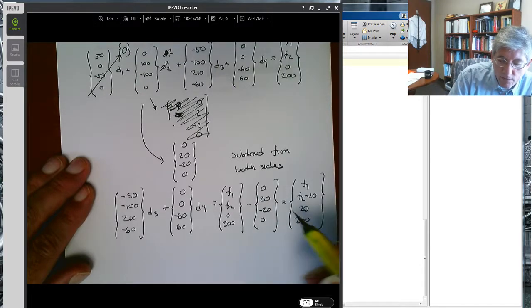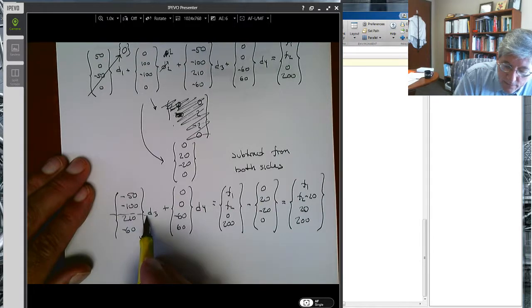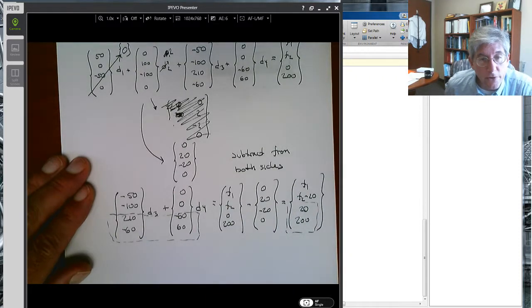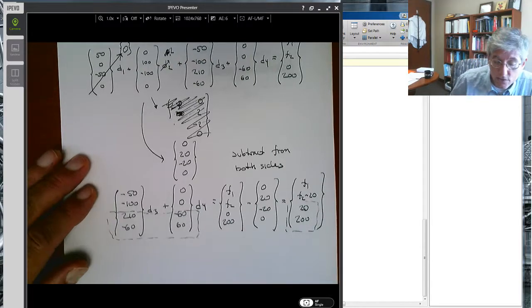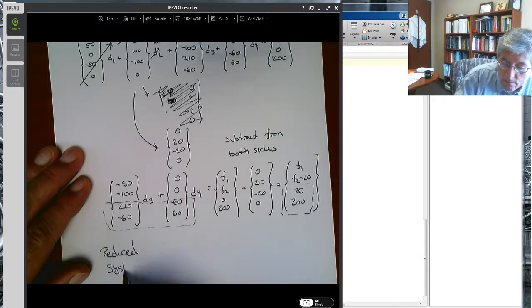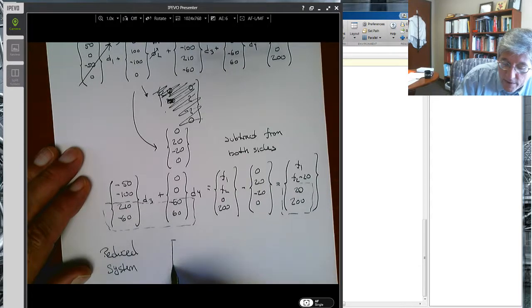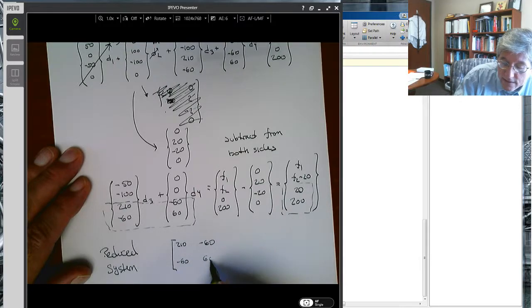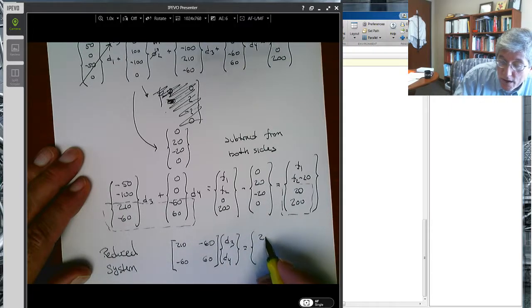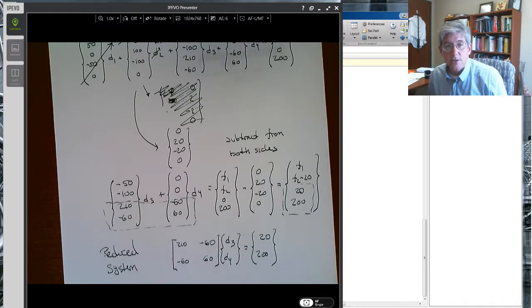So now I can solve this reduced system just like I did before, but I have to use that altered right-hand side. So basically, what we're going to solve for the reduced system is now changed a little bit, but just on the right-hand side vector. 210, minus 60, minus 60, 60, that matrix actually stays the same, times D3, D4, and that is now going to equal 20, so that's what's changed, and the 200. That's the only thing that's changed, but that's what's going to make the difference.